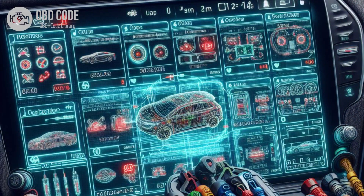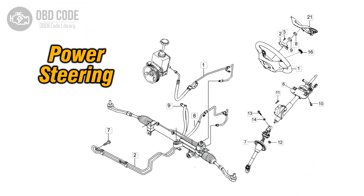If the problem continues, further diagnosis may be needed. This may involve using a scan tool to monitor the sensor's readings and pinpoint the exact cause of the malfunction. If other components of the power steering system are found to be faulty, such as the pump or control module, they should be repaired or replaced accordingly.